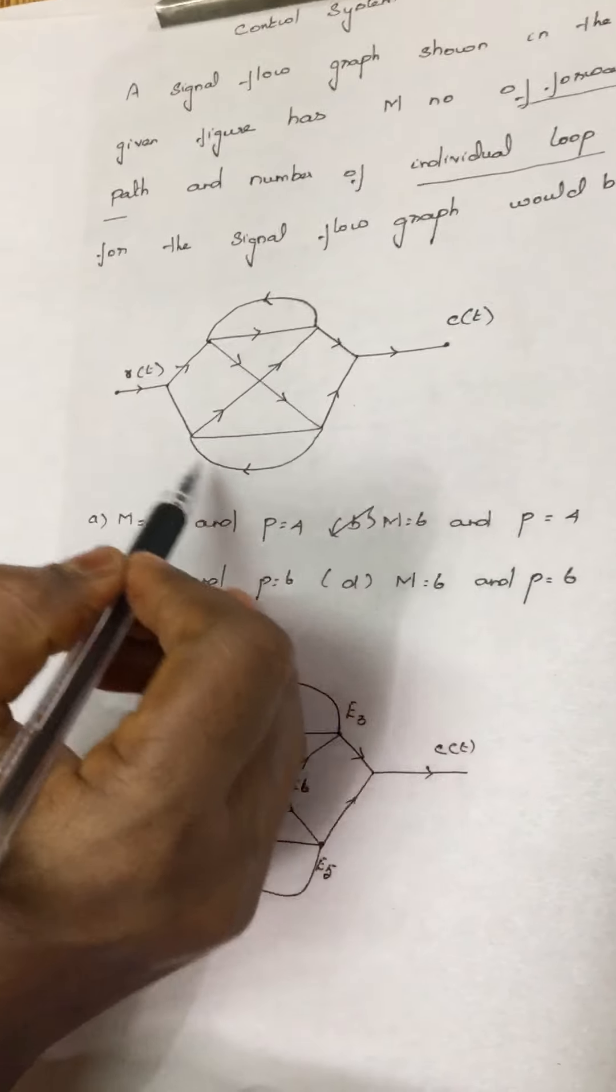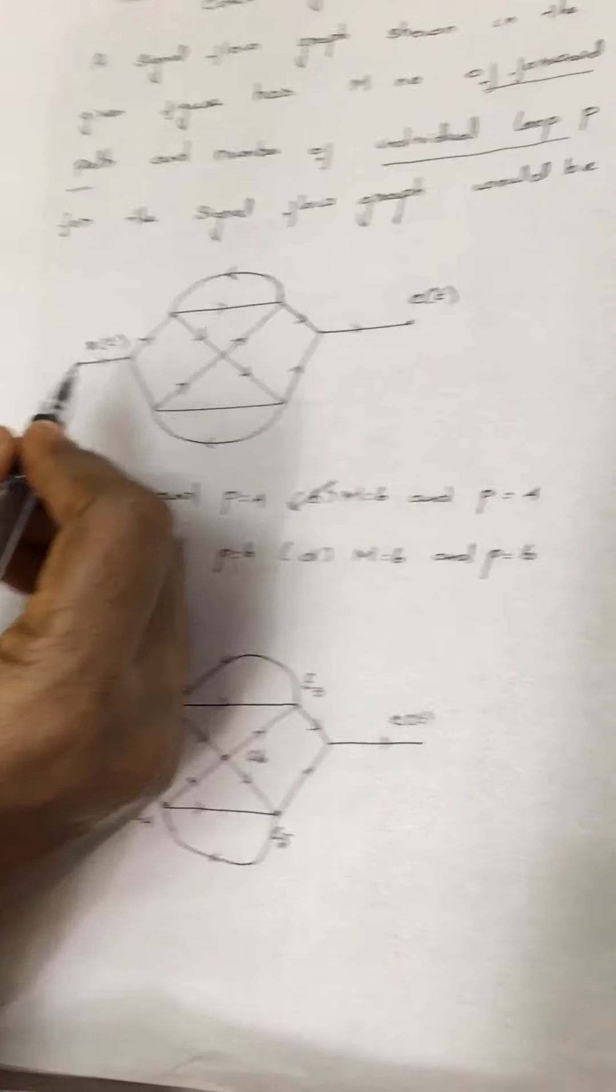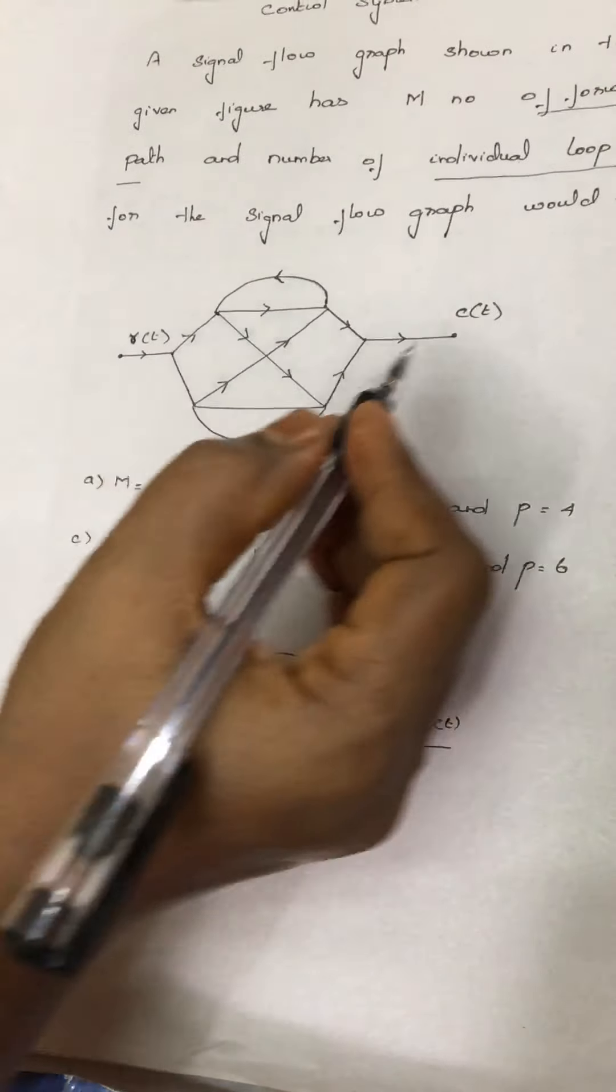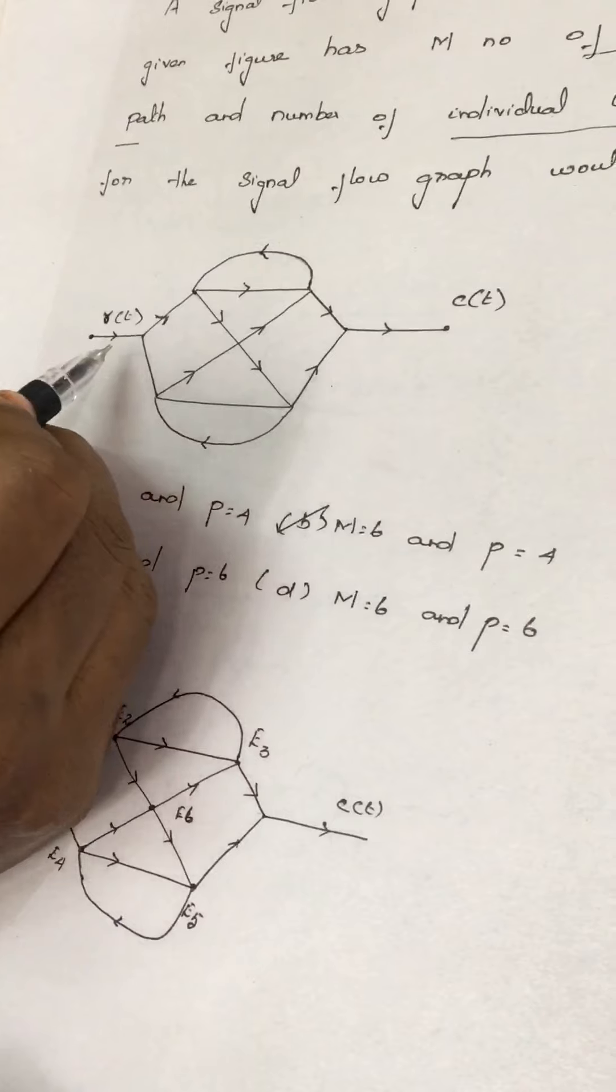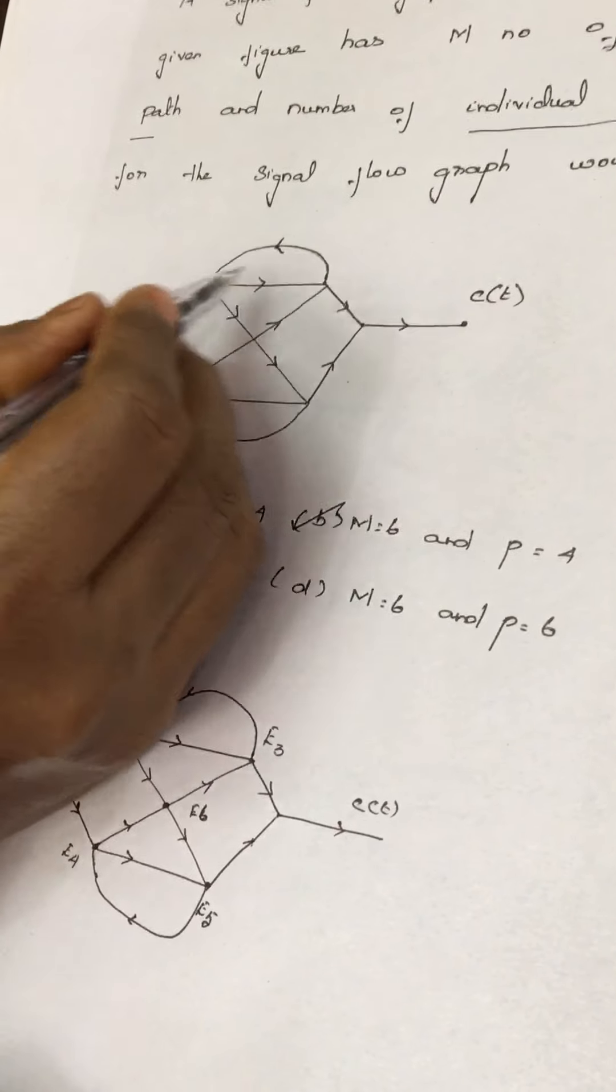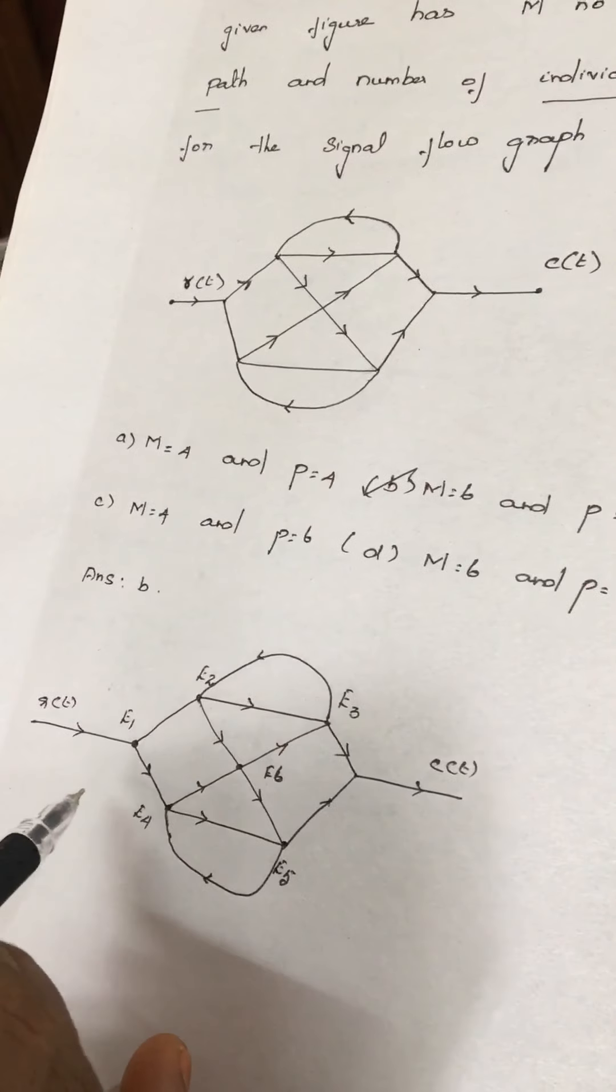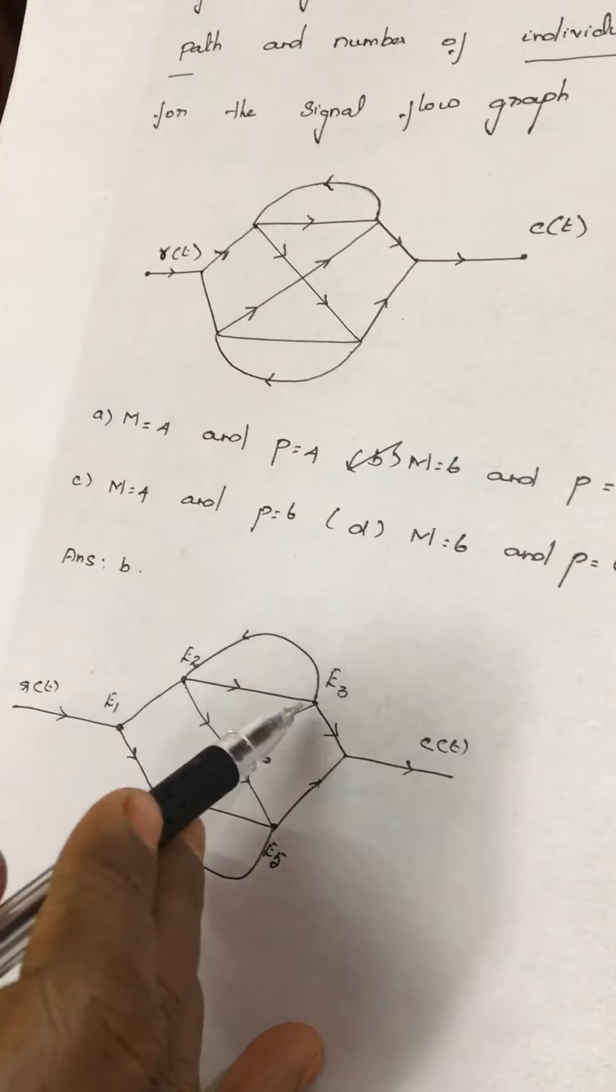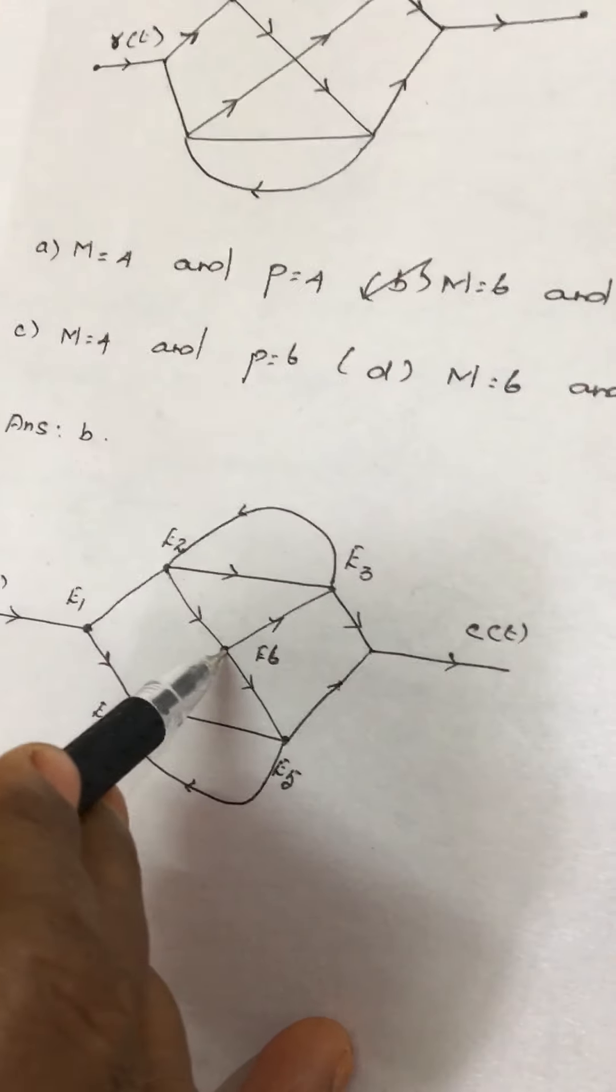This is the shown diagram in which, as discussed earlier, the signal flow graph consists of an input signal R of T and the output signal C of T. The R of T represents the signals which move from one node to another node. Here I have represented the nodes first: E1, E2, E3, E4, E5, and E6.